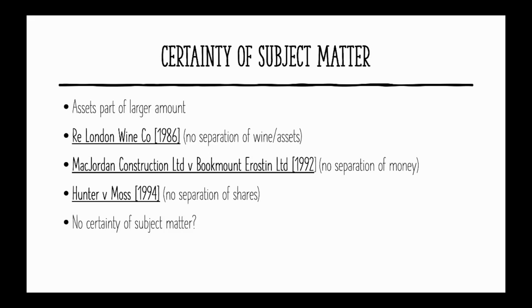The same outcome arose in McJordan in 1992. This case concerned money in a bank account that was supposed to be paid to builders after the completion of a construction project. The money was never separated from the other assets of the company, and therefore when the company went bankrupt there was no way to identify which money the builders were entitled to. The trust simply failed.